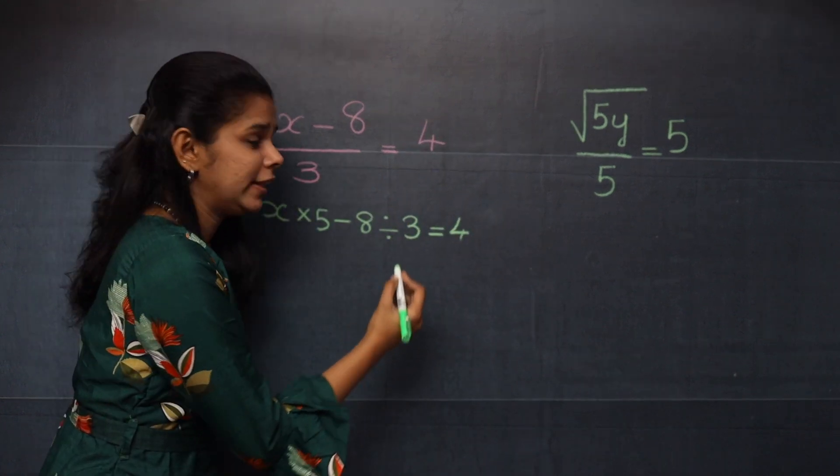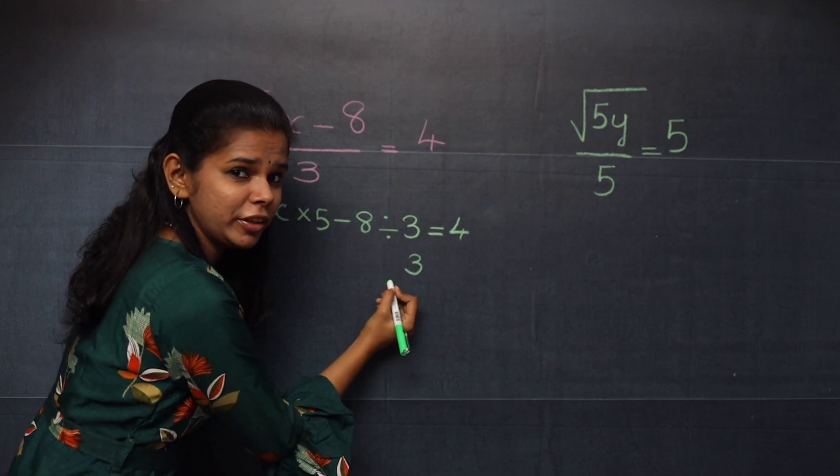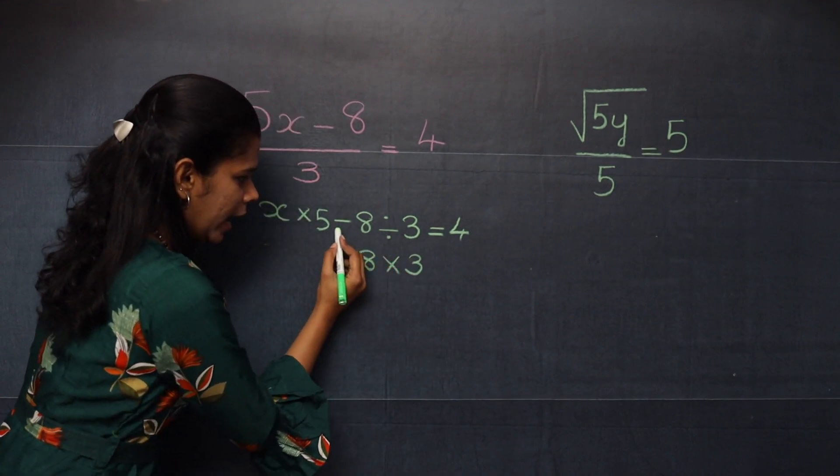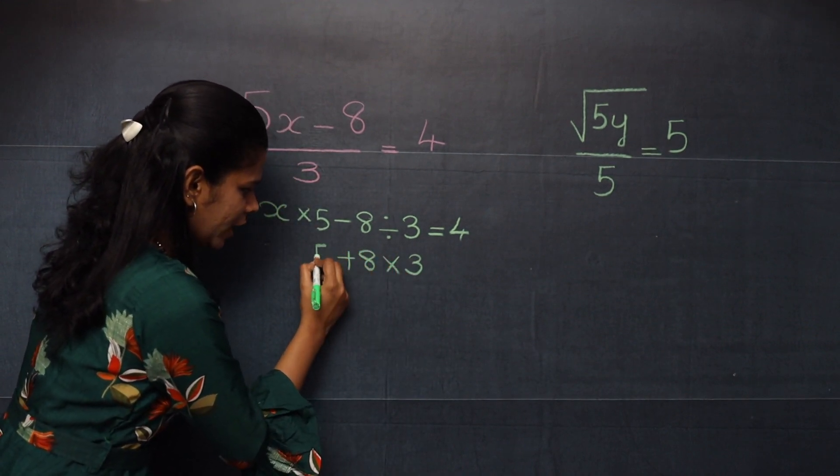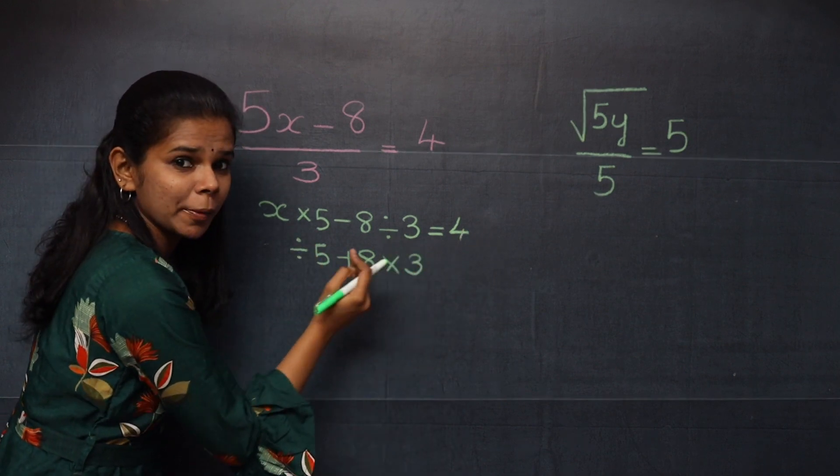Now you will take the inverse operation. First you will write 3. And what is the inverse operation of division? Multiplication. Then 8, and plus 5, and then it is division. Now you will start from right to left.